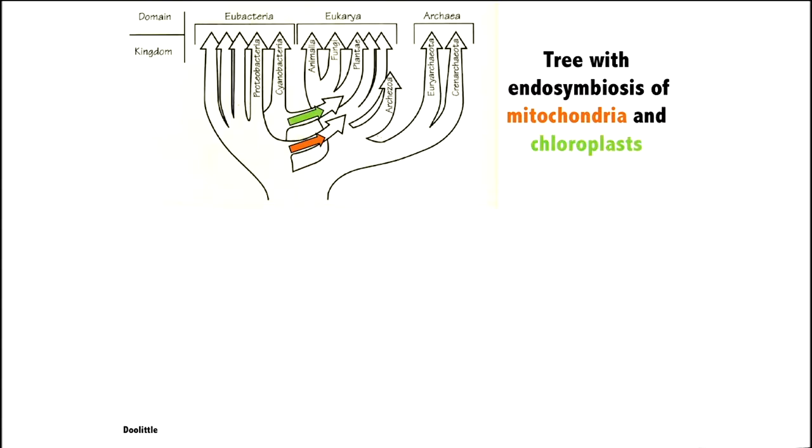There's also another endosymbiotic event that happened, and that's when cyanobacteria, bacteria capable of photosynthesis, got endosymbiotically incorporated into early plants, and that allows current plants to perform photosynthesis. It's a bacterial invention that got incorporated into a larger multicellular organism.